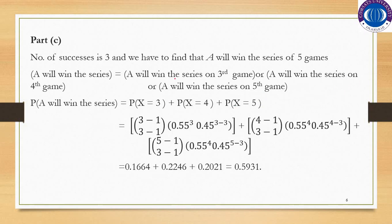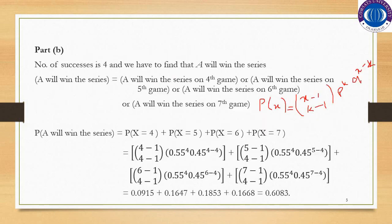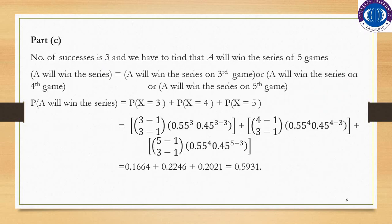The number of successes has changed. In the previous situation, K was equal to 4 because the winner was whoever won 4 games. Now K equals 3, since the winner is declared based on winning 3 games. We have to find the probability that Team A wins the series of 5 games.